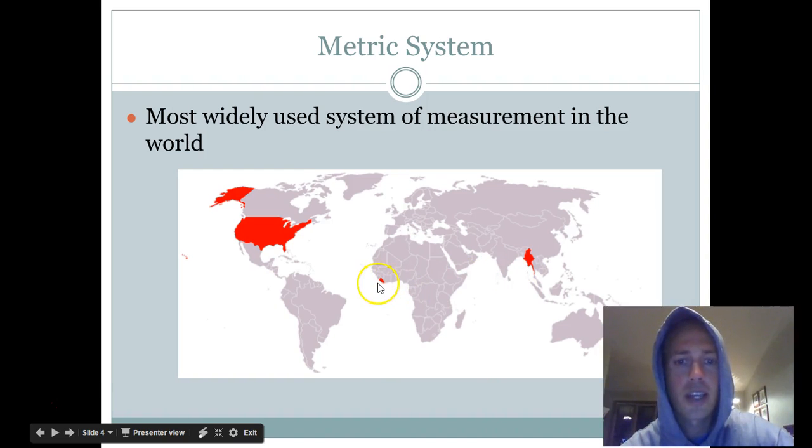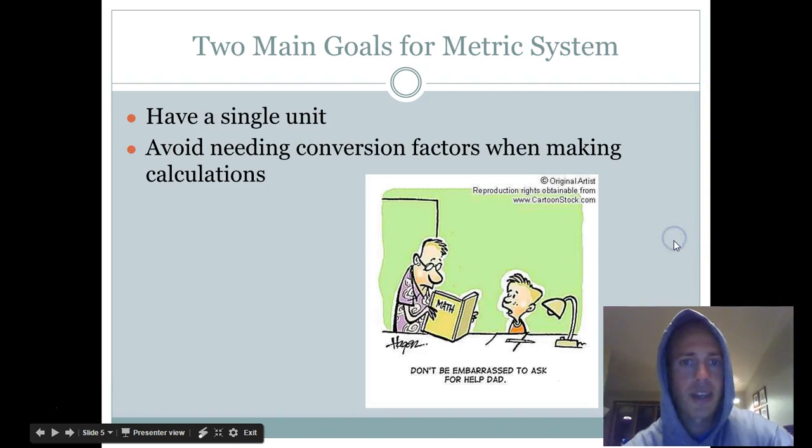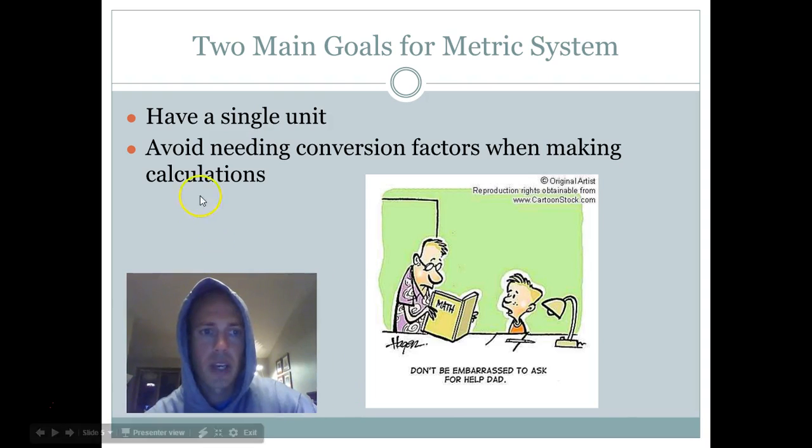This is Myanmar. Myanmar, formerly known as Burma. Those are the only three nations in the entire world that don't officially use the metric system as their official way to measure different things. There's a reason they do. All these countries, they can go from a single unit.